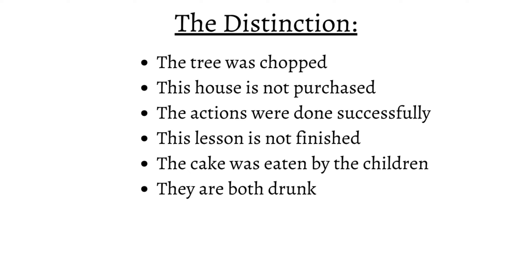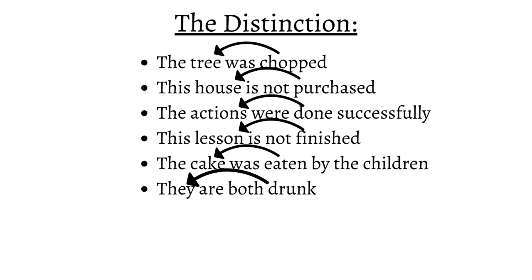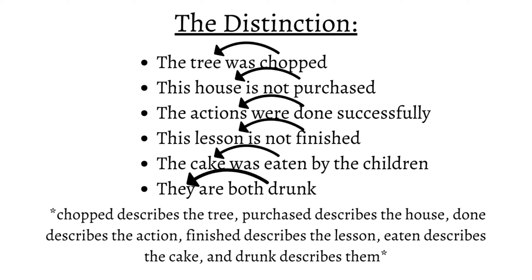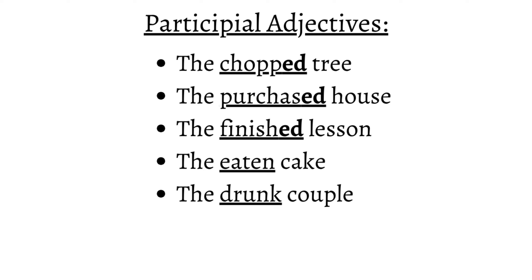To further tell what makes a participial adjective, we can see that it acts upon the subject instead of the subject acting. So, the word "chopped" describes the tree, acting like an adjective. "Purchased" describes the house. "Done" describes the actions. "Finished" describes the lesson, and so on. Additionally, it's possible to implement participial adjectives directly with the subject without relying on verbs: the chopped tree, the purchased house, the finished lesson, the eaten cake, the drunk couple. This way, the adjectives are still participial, but they're positioned formally. This process can be done with any adjective.